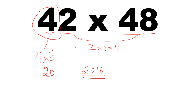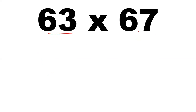The only condition is the tens digit should be same and the unit digits should have a sum of 10. Let's see some more examples. For 63 and 67, the tens digits are same and the unit digits sum to 10: 3 plus 7 is 10.